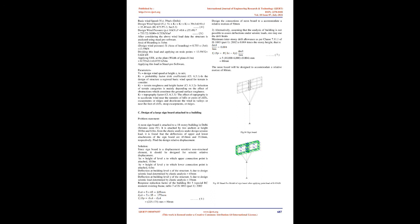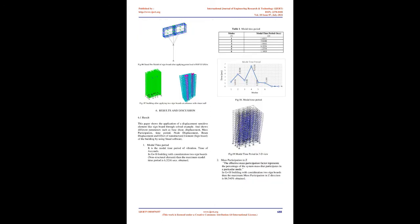Objectives: To study different parameters of the building such as base shear, displacement, and time period with respect to non-structural elements such as signboard. Preliminary data considered for the analysis: G plus 18 number of stories are considered. The plan has dimensions 30.36 x 17.15 m. M30 grade of concrete is used, site location is Delhi (Seismic Zone 4), and the height of each story is 3.0 m. Inner and outer wall thickness is 0.15 m, slab thickness is 0.125 m, frame type is Ordinary Moment Resisting Frame (OMRF), soil type is medium or stiff, and grade of steel is FY500.